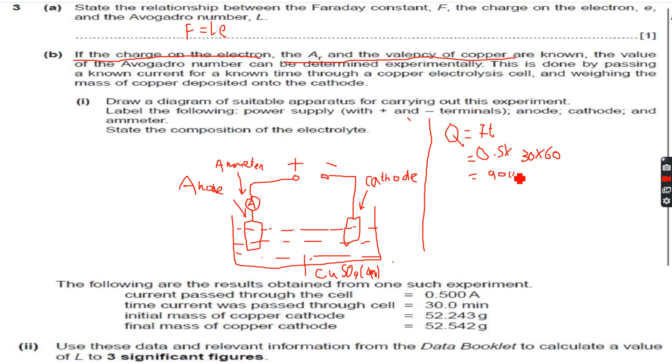Then we have the half equation. Because we know the valency of copper, we will know the half equation, which is Cu2+ accepts two electrons to give Cu. This is the reaction happening at the cathode.